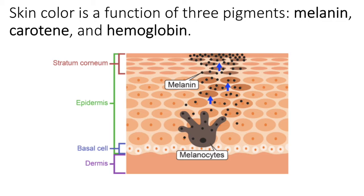All individuals have melanocytes. It's the activity level of each individual's melanocytes that dictates how much melanin that individual has. Melanin is a pigment that ranges in color from brown to black, and it's genetically predetermined. Someone with very dark melanin would present with very dark skin, and their skin cells would be more protected than an individual with lighter-color melanin.